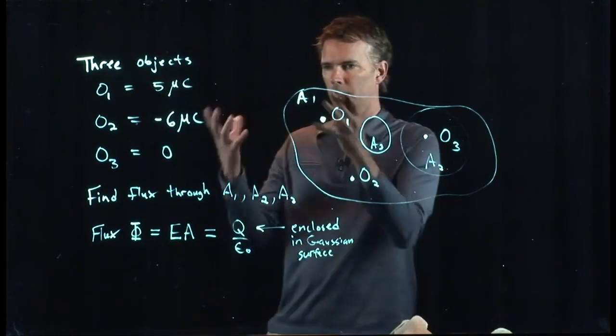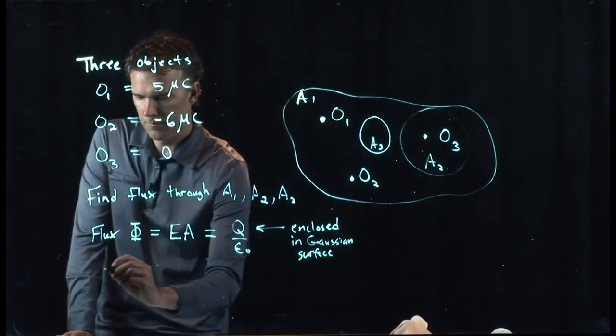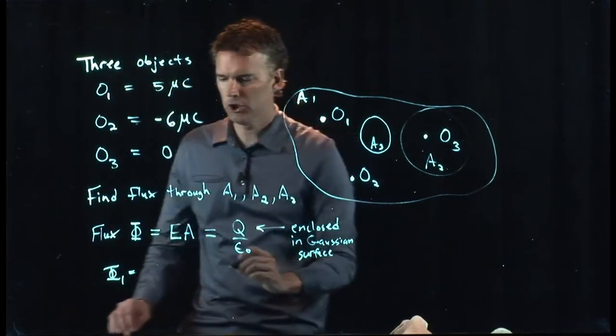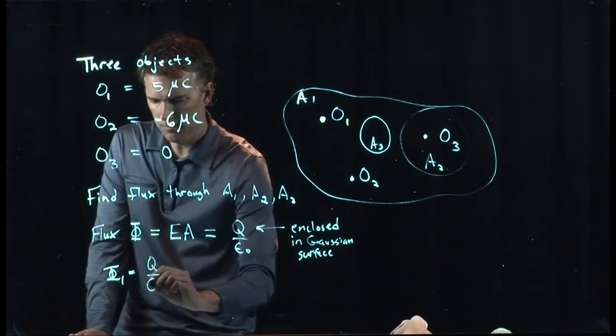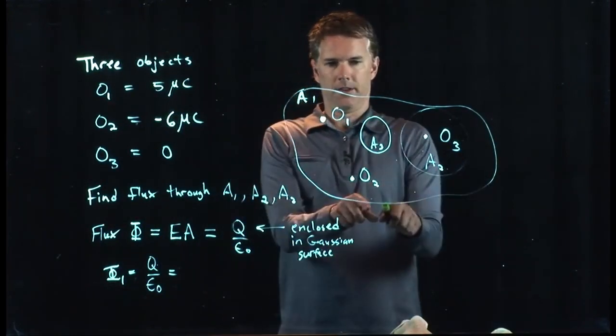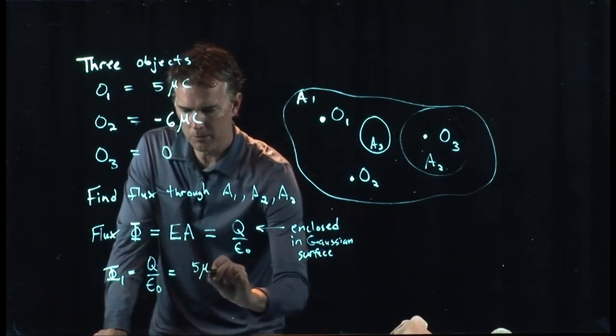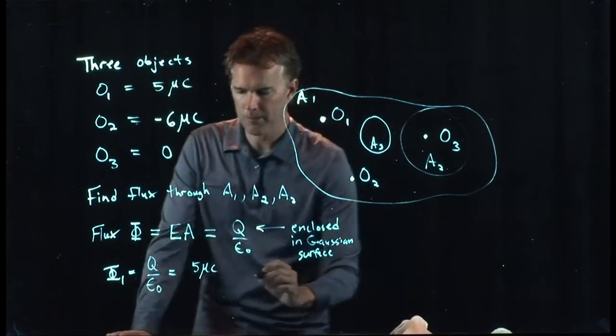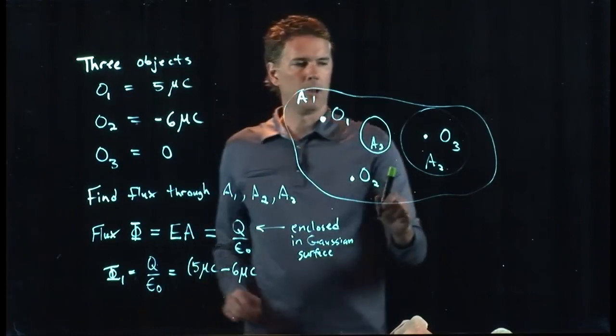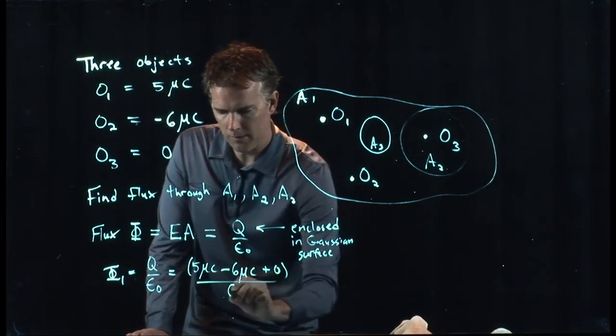What is inside that closed surface? So area 1, phi 1 is just going to be how much charge is there inside area 1 divided by epsilon naught. Area 1 covers everything. So that's going to be the charge of object 1, 5 microcoulombs, plus the charge of object 2, minus 6 microcoulombs, plus the charge of object 3, which we said was 0, all of that over epsilon naught.